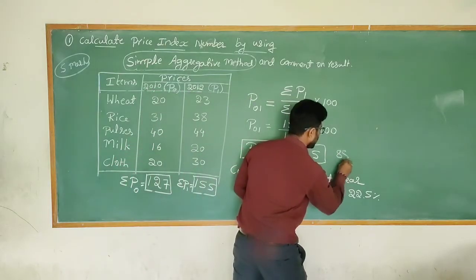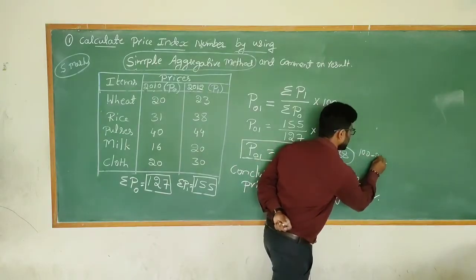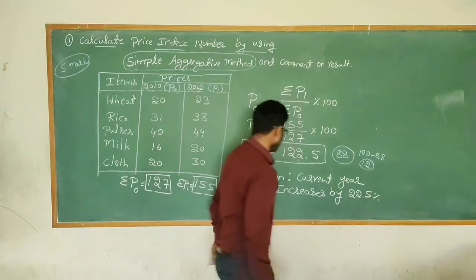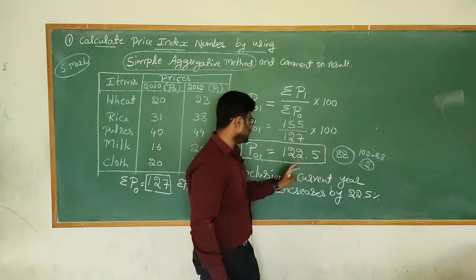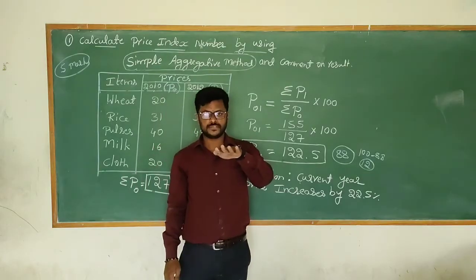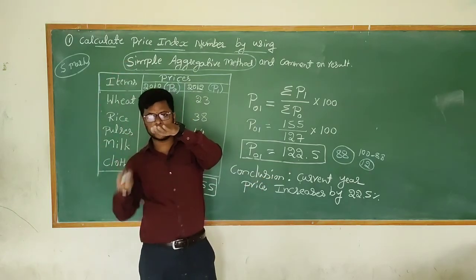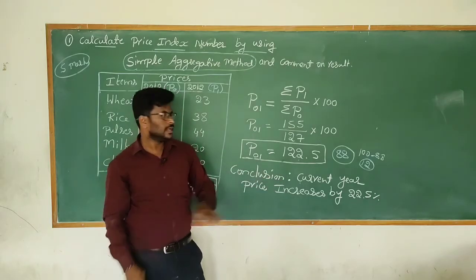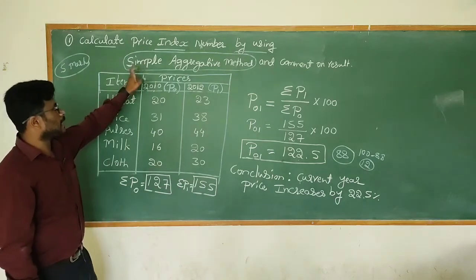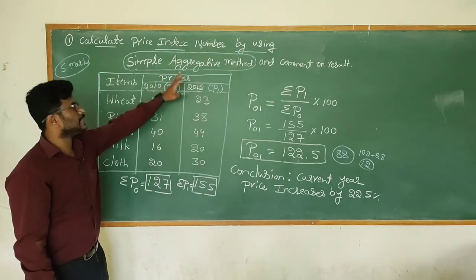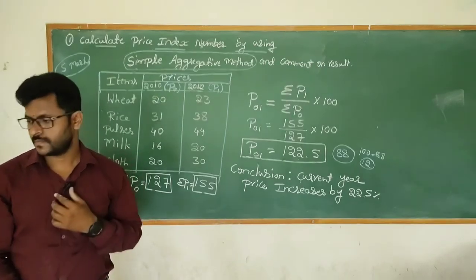To illustrate: if the result were 88 instead — which is less than 100 — we would calculate 100 minus 88 = 12, and conclude that the current year price decreased by 12%. So if the result is more than 100, prices increased; if less than 100, prices decreased. That is how we give the conclusion or comment on the result. I hope all students have understood this topic on the simple aggregative method or unweighted price index method. Thank you — please like, share, and comment.